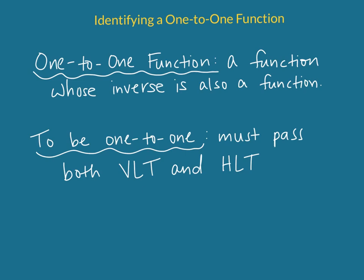Here we'll be talking about one-to-one functions. A one-to-one function is a specific function that has an inverse that's also a function. In order to be one-to-one you need to pass both the vertical line test and the horizontal line test. The vertical line test ensures that the original is a function, while the horizontal line test ensures that its inverse is a function. So if you only pass the vertical line test it's a function, but if you pass both it's called a one-to-one function.